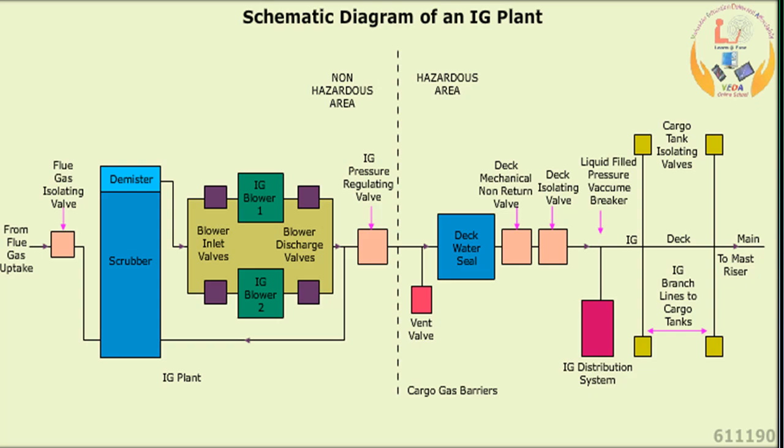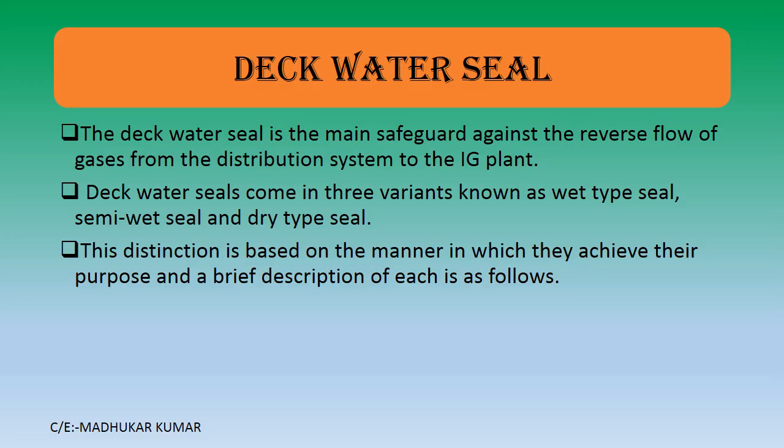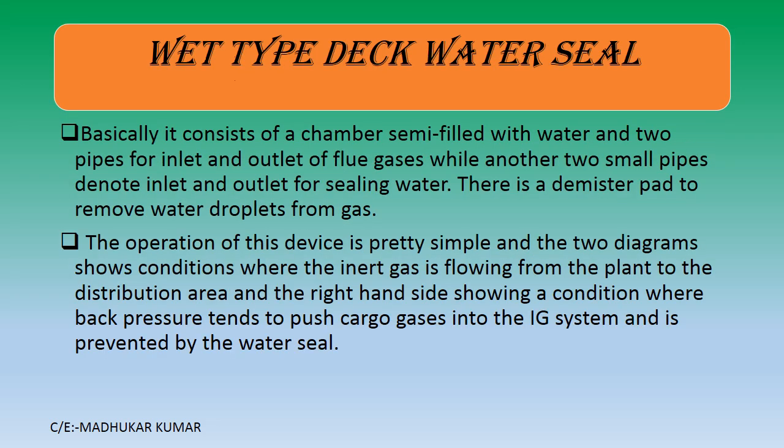Now we are going to see about the deck water seal. The deck water seal is basically a main safeguard against the reverse flow of gases from the distribution system of the IG plant — it does not allow the IG to backflow. Deck water seals come in three variants: the wet type, which is used widely; the semi-wet type; and the dry type. This distinction is based upon the manner in which they achieve their purpose.